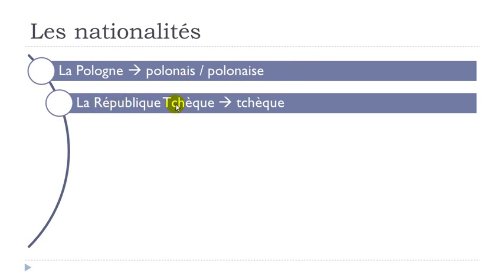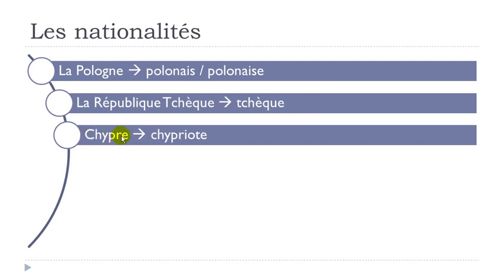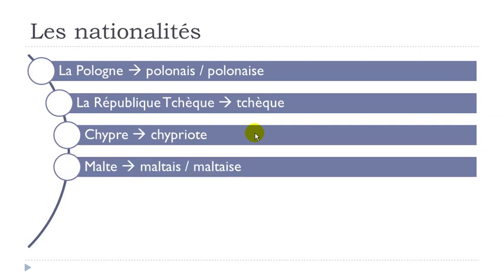La République Tchèque — tchèque. Only one nationality here, so whether for masculine or feminine form it will be the same: tchèque. Remember, this Y is pronounced like E — tchèque.